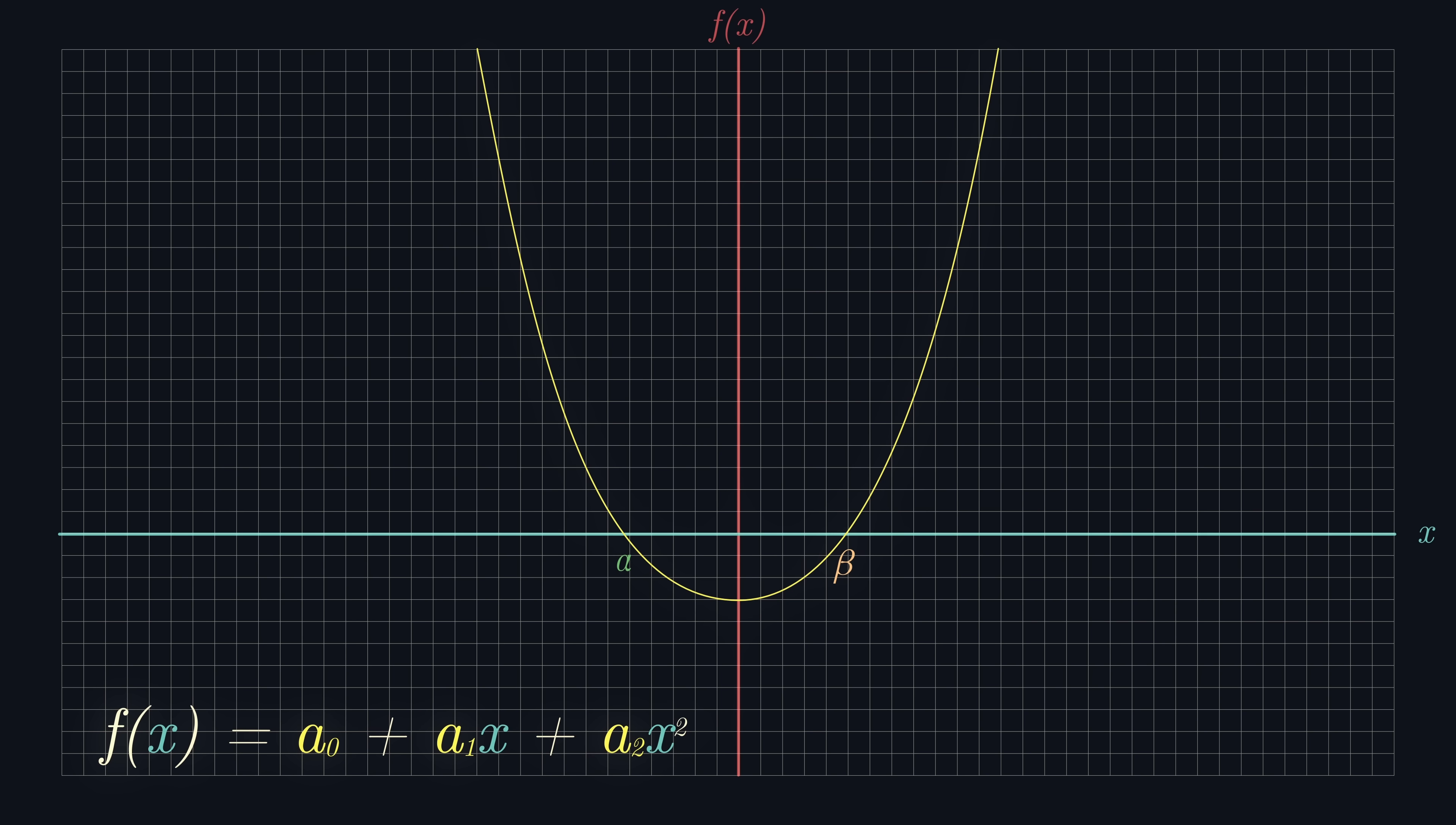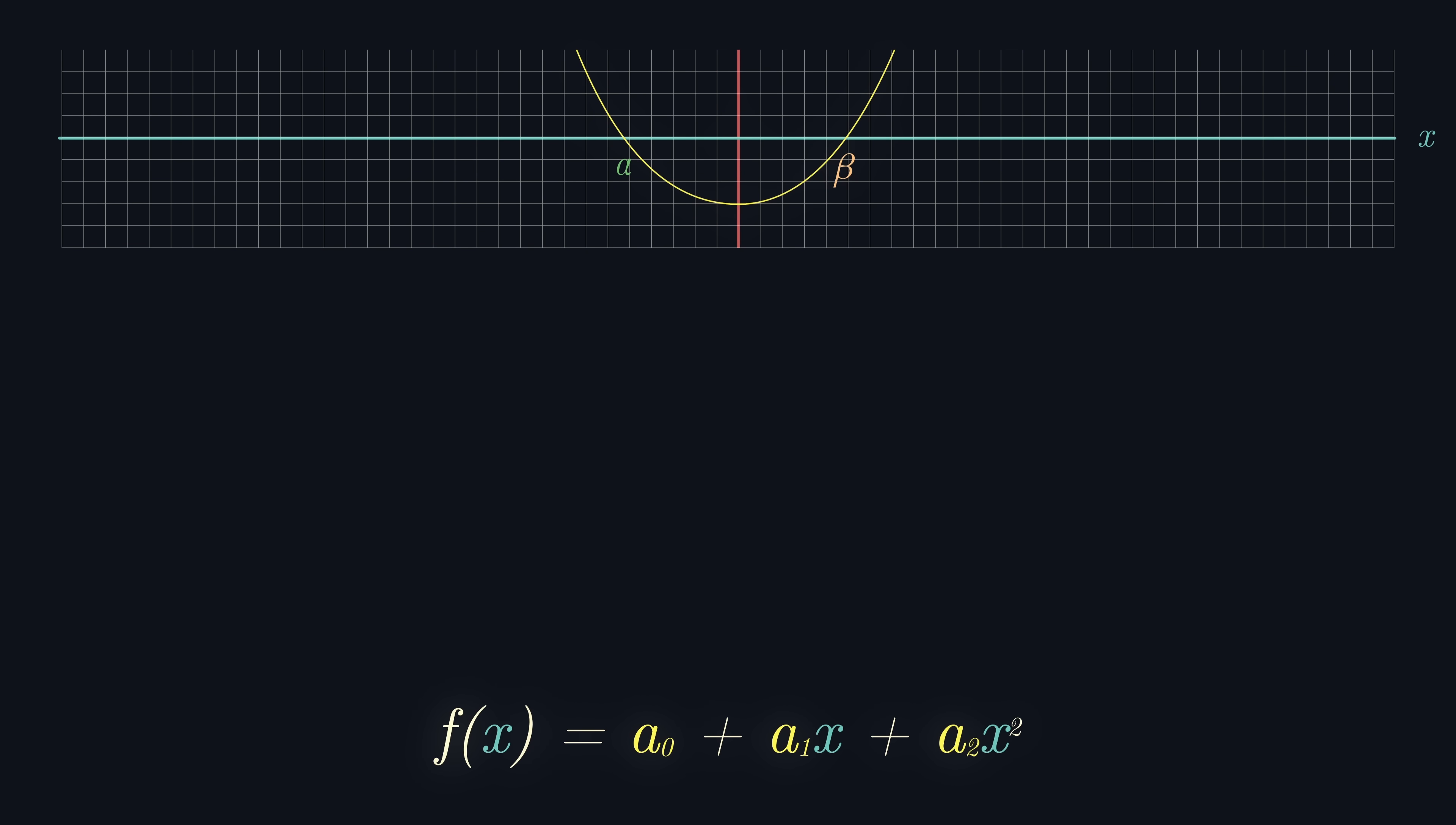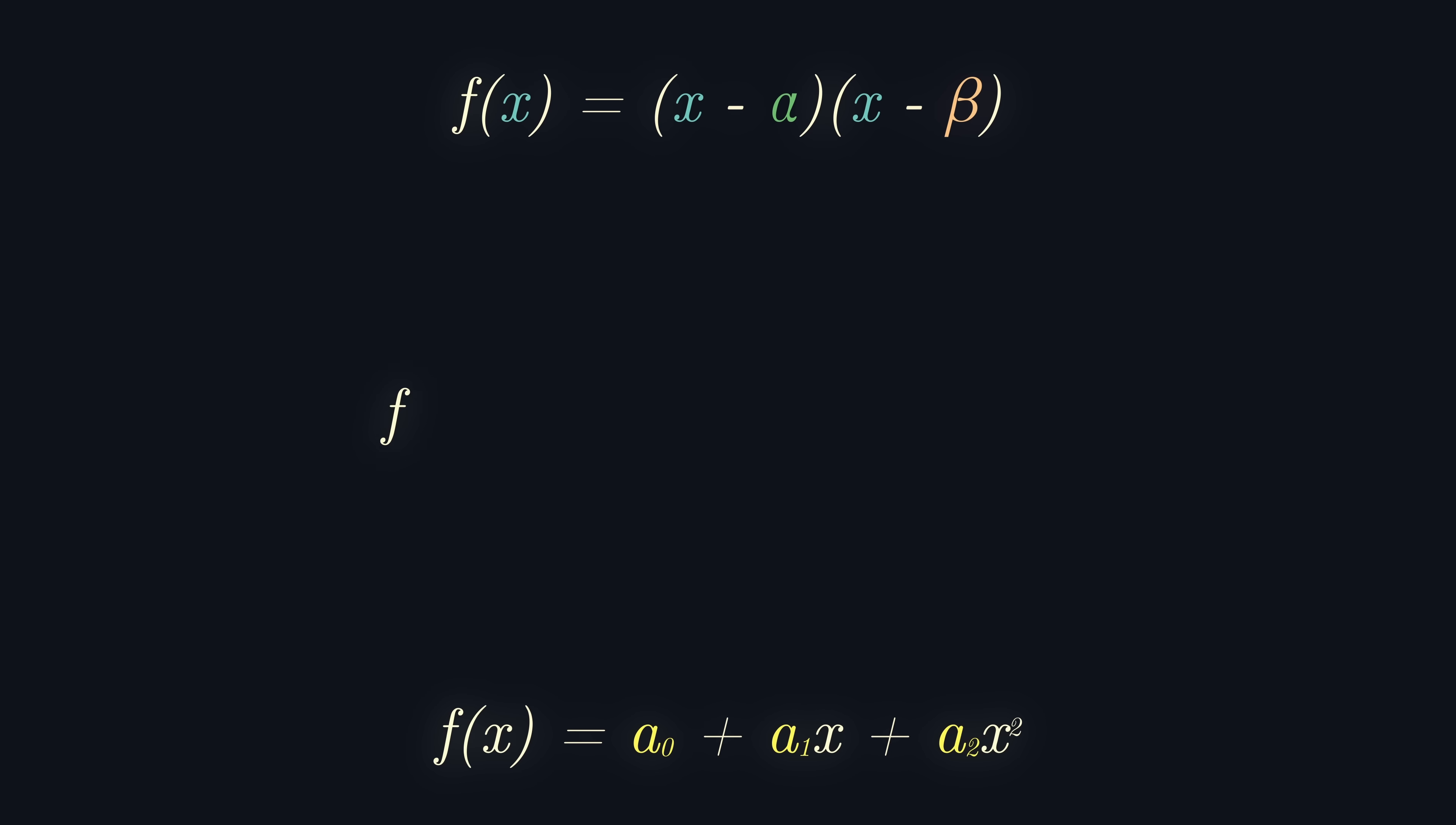Suppose that this polynomial has roots alpha and beta. The factor theorem states that alpha is a root of f of x, or in other words, f of alpha equals 0, if and only if x minus alpha is a factor of f of x. It follows that x minus alpha and x minus beta both divide f of x, and since the degree of f is 2, since it's quadratic, we can say that f of x equals x minus alpha times x minus beta.